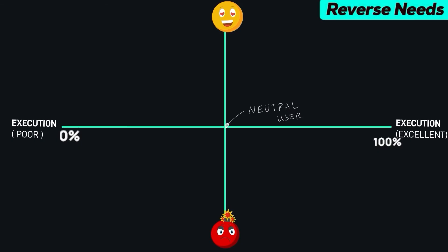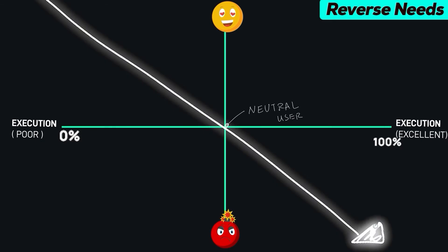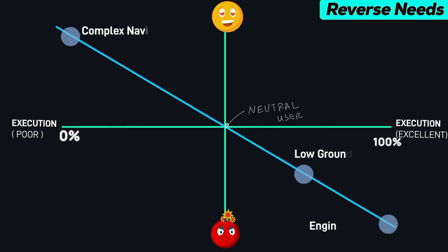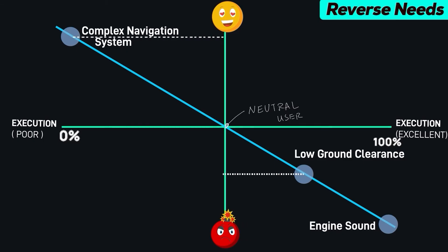Now, reverse needs. Reverse needs actually reduce customer satisfaction if present — their presence decreases customer satisfaction. The less they are present, the happier the customer, and in the Kano model this line goes from top to bottom. Consider the engine sound of a car: the more it is executed, meaning the louder the car sounds, the more the customer's happiness level goes down. From our car example, three reverse needs are: a complex navigation system, low ground clearance, and engine sound. The more these requirements are executed, the less happy the customer becomes.